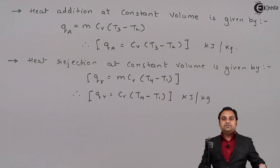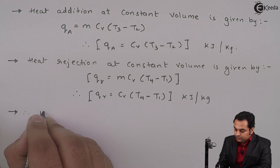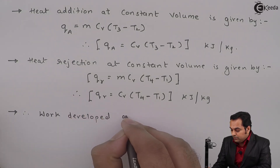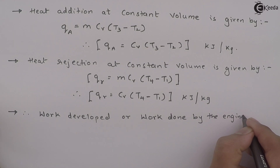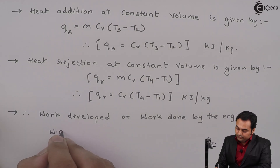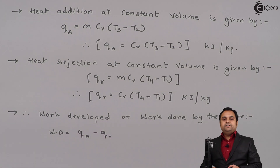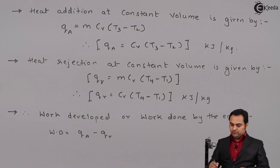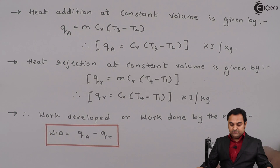Now after heat addition and heat rejection, I will write down the work developed. Work done by the engine is given by WD = heat added − heat rejected, because the amount of heat utilized to convert to mechanical work is QA − QR. Therefore: WD = Cv·(T3 − T2) − Cv·(T4 − T1) = Cv·[(T3 − T2) − (T4 − T1)].